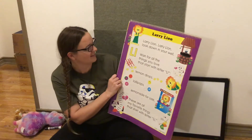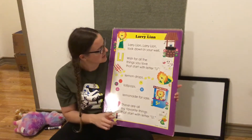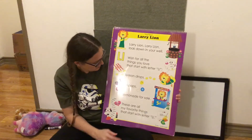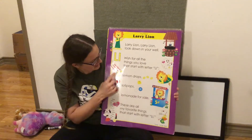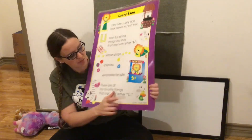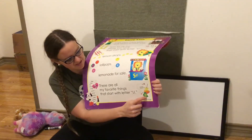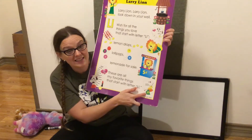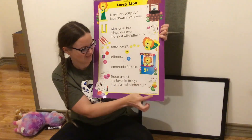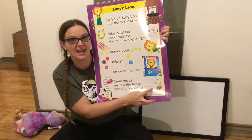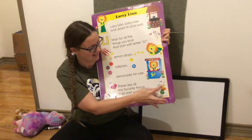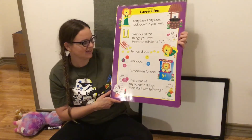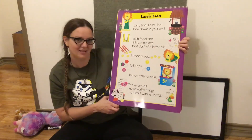Alright, so we got some stuff that starts with an L. We've got a lion, lemonade, lemon drops, lollipops. And if you look really close here at this picture, there's leaves and letters, a light bulb and lemons. Those all begin with L.